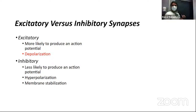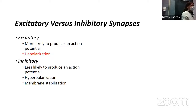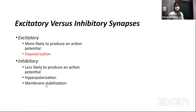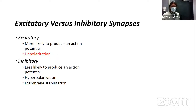Excitatory post-synaptic potentials are depolarizations — they get us closer to threshold, so we're more likely to produce an action potential. That's why we call them excitatory: an excited cell is firing. Inhibitory post-synaptic potentials make us less likely to produce an action potential because we are hyperpolarized. There's also membrane stabilization, which is more complex — for now, just know it exists and involves chloride ions acting somewhat like a buffer, balancing out changes to membrane potential.